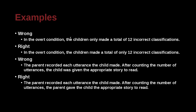'In the overt condition, the children only made a total of 12 incorrect classifications' — 'only made' is wrong. The correct version is simply 'made a total of 12 incorrect classifications.' Including 'only' makes it sound small. In your research, you should not be characterizing results as small or big unless you have a specific comparison — just state the result. Whether 12 is big or small can be discussed in the discussion section.